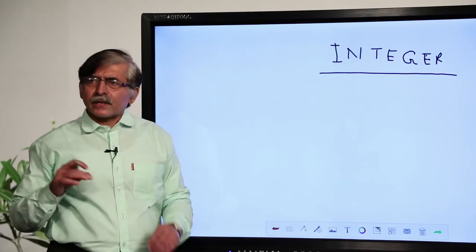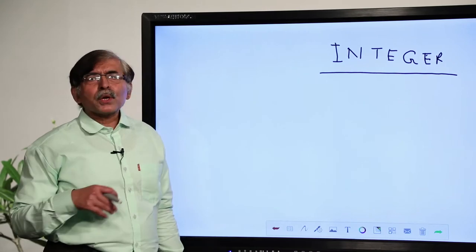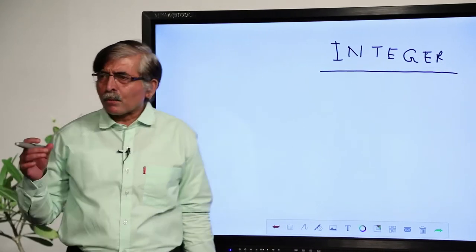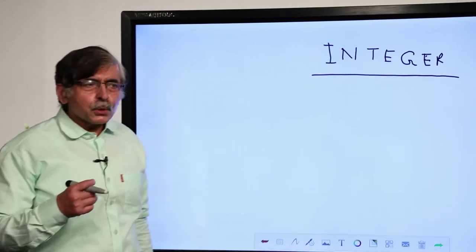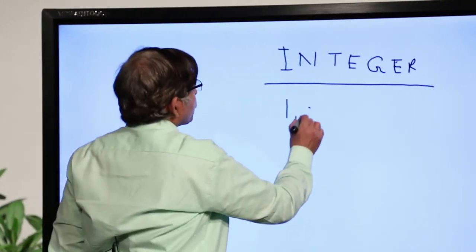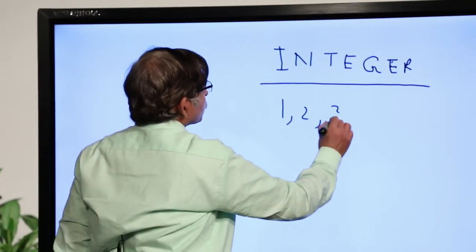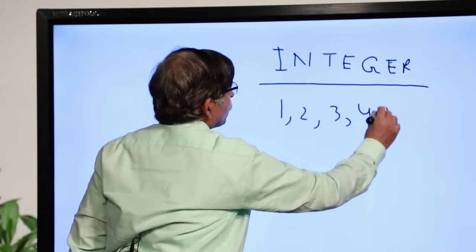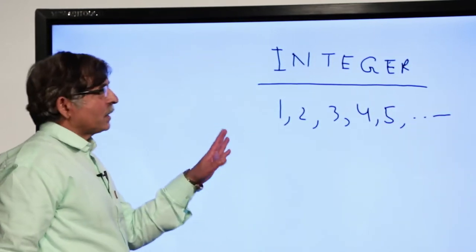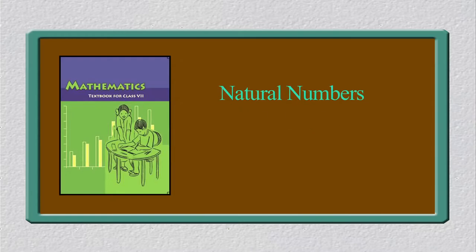Natural numbers means the numbers which we generally use for counting. Whenever some objects are given, we use the numbers 1, 2, 3, 4, 5, and so on. These numbers are nothing but counting numbers or natural numbers.